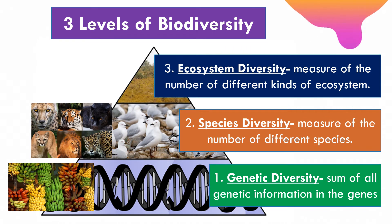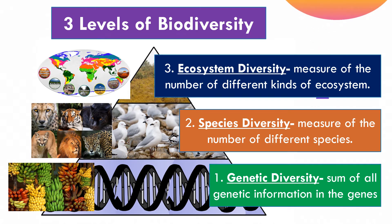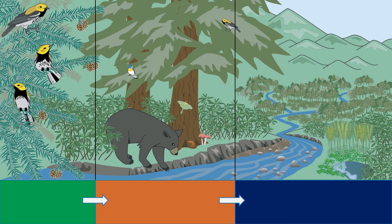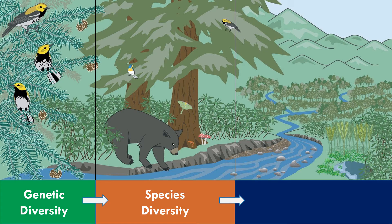Lastly, we have ecosystem diversity, which refers to the measure of the number of different kinds of ecosystems. Best examples are the existence of different biomes, which help in catering to the different needs and adaptation of every species of plants and animals. As you can see in this picture, it best represents the ideas of the three levels of biodiversity. The left-most part shows genetic diversity — there are different birds in terms of their feather colors, but they belong to the same species. The middle column represents species diversity, where you can see different animals and plant species. And the right-most column represents the ecosystem, where you can see different habitats such as swamps, forest, and mountainous areas.